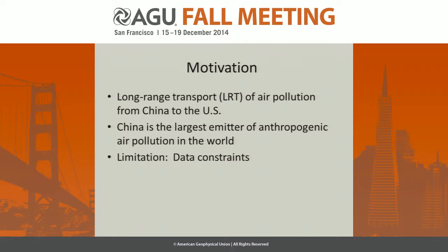Many studies have shown the long-range transport of air pollution from Asia to the U.S. In our study we're particularly interested in China since currently they're the largest emitter of anthropogenic air pollution in the world. Many studies that have observed this relationship have used chemical transport models, remote sensing, in situ observations, and to a lesser degree statistical models. The major reason for this is obtaining detailed, rich air quality data sets in China.